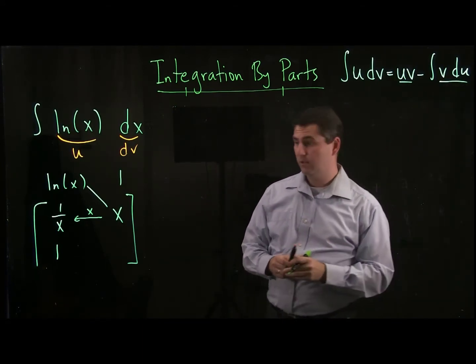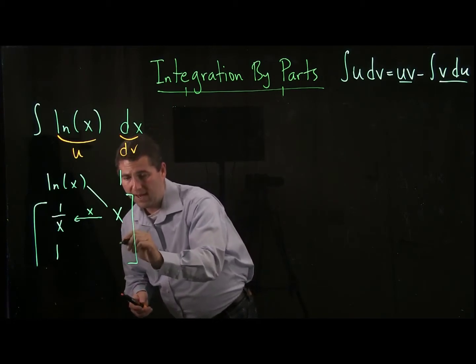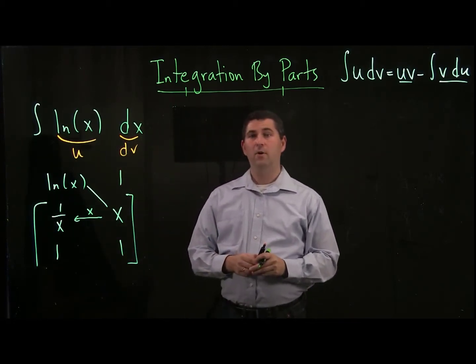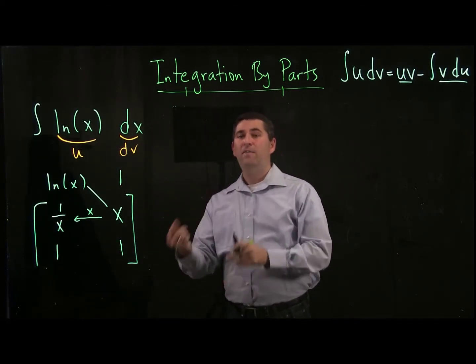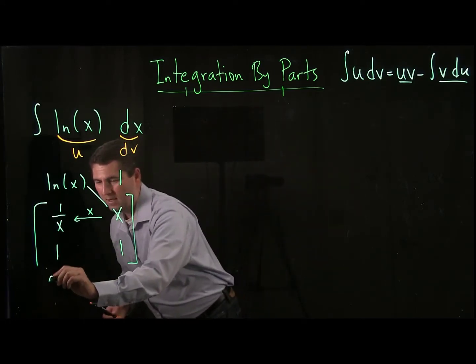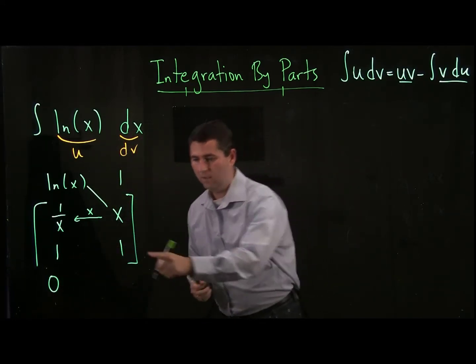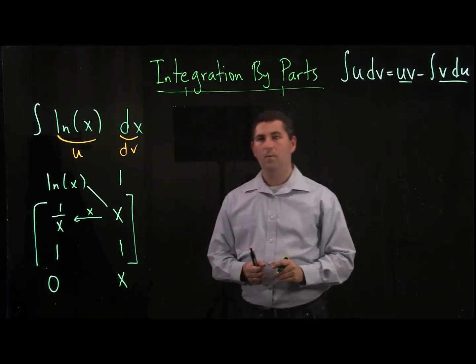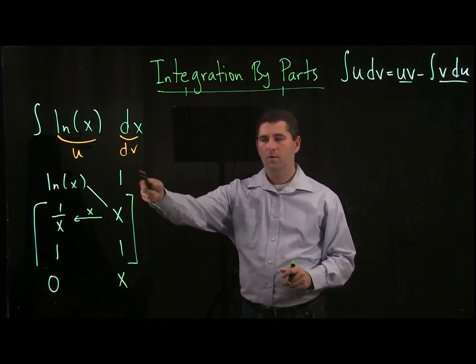And if I move that x over, then there's only a 1 left over. And now if I applied integration by parts, I would end up with a 0 on the left and an x on the right.